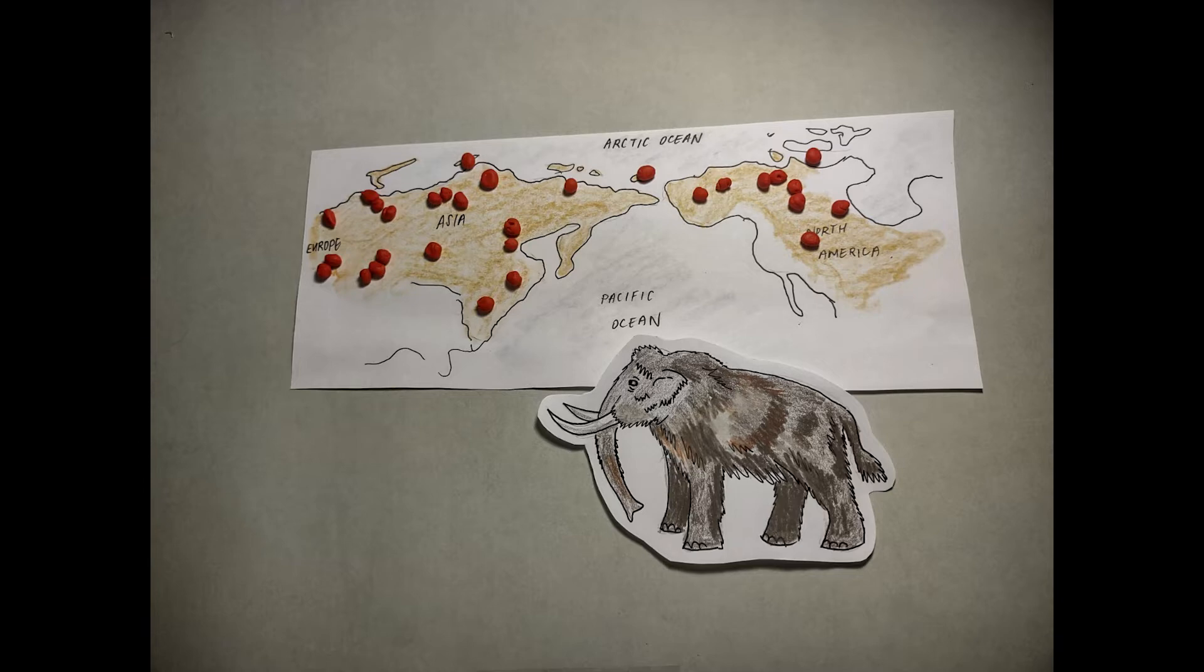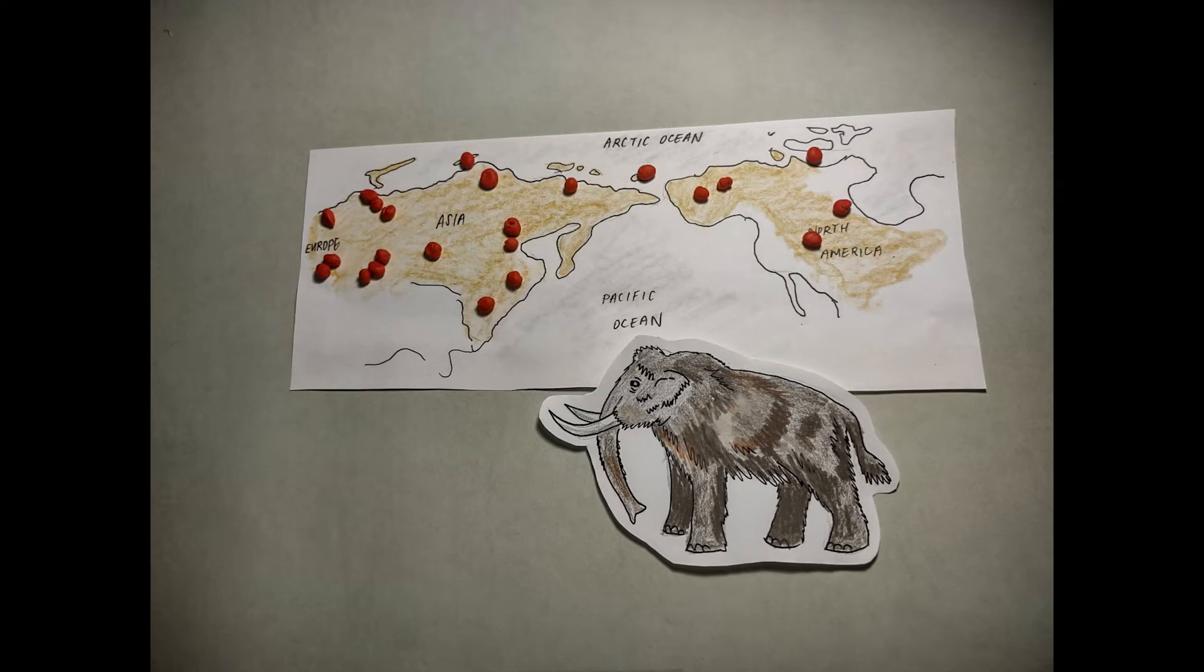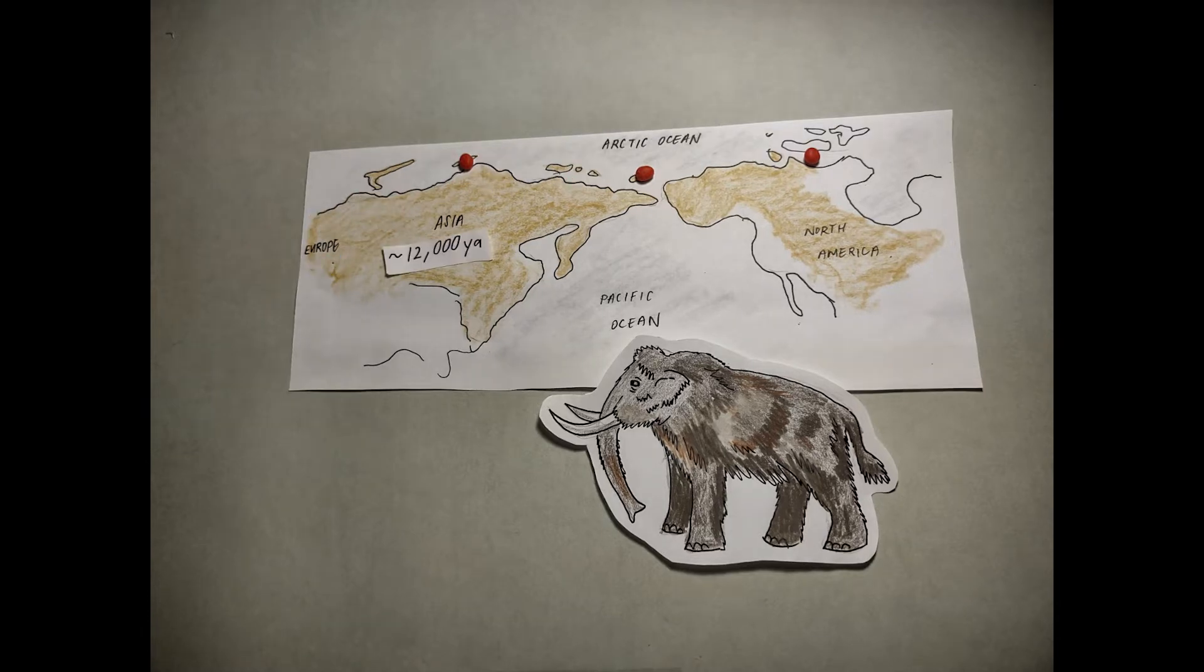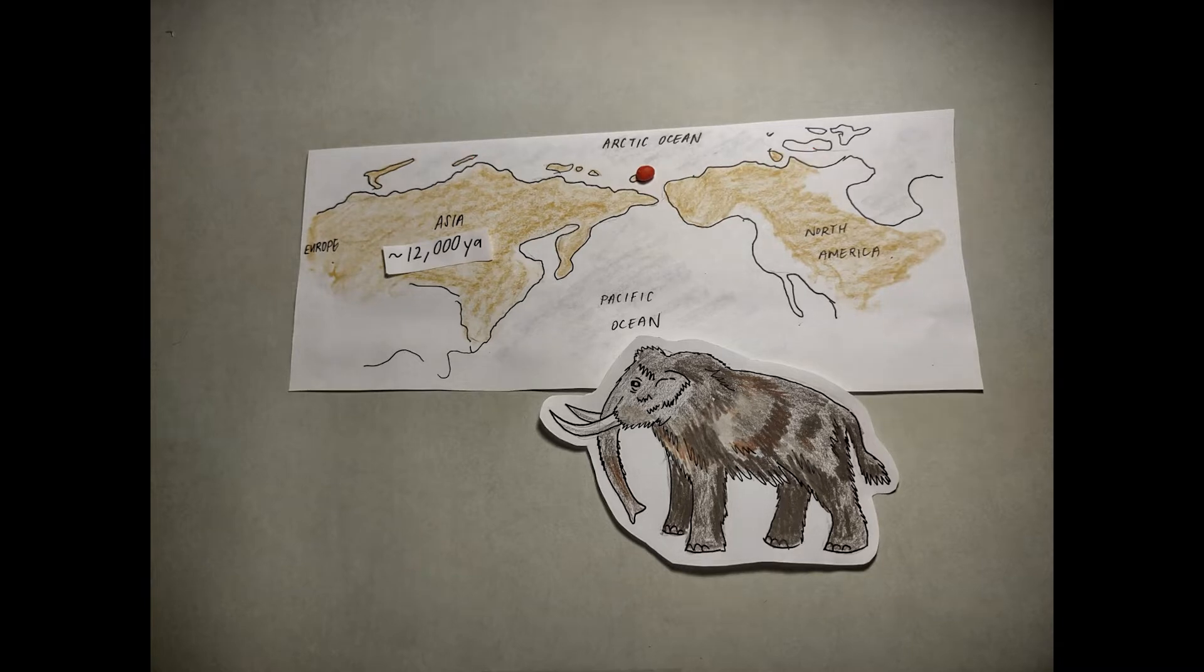Sadly, mainland populations went extinct around the end of the Pleistocene era approximately 12,000 years ago as the climate fluctuated. The Holocene era, characterized by a warmer and more stable climate, brought about the decline of the tundra steppe and only small isolated mammoth populations remained.